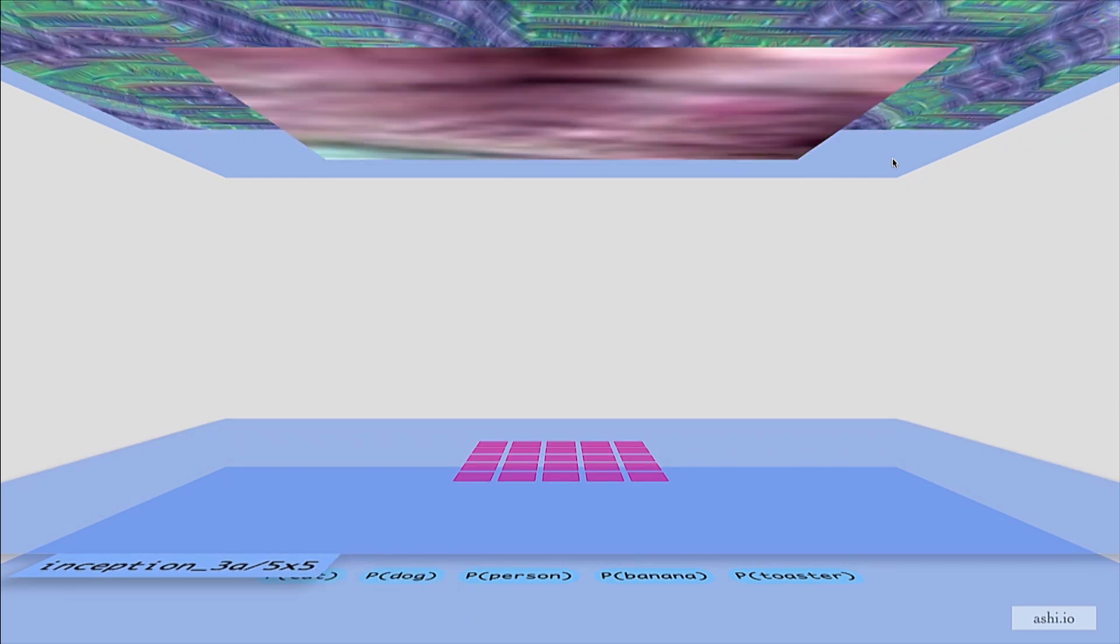So the probability that this image is of a cat, the probability of a dog, a person, a banana, a toaster. It performs this reshaping through a series of convolutional filters. Now, convolutional filters are basically Photoshop filters.